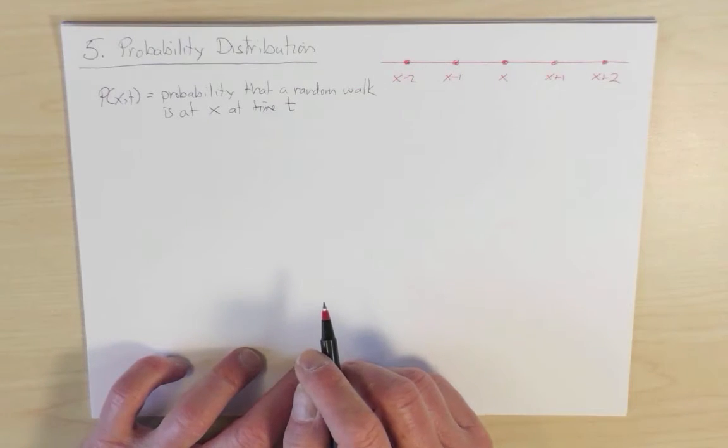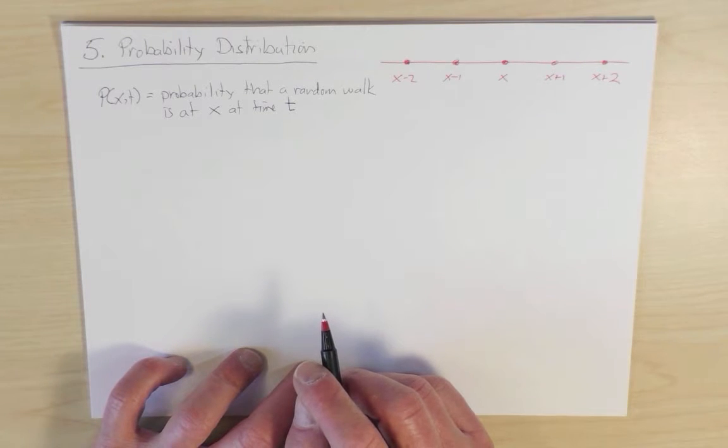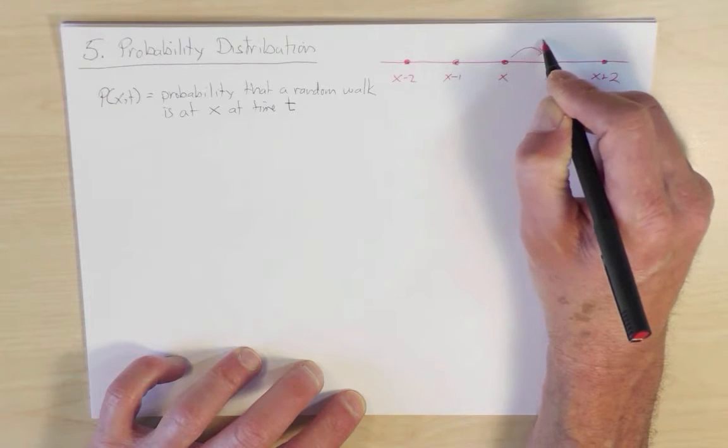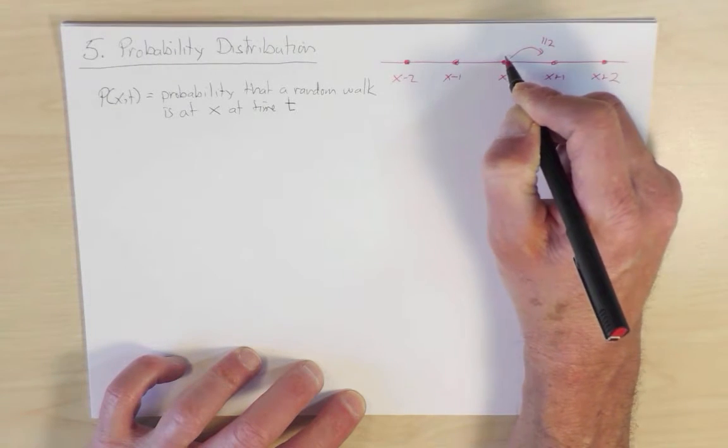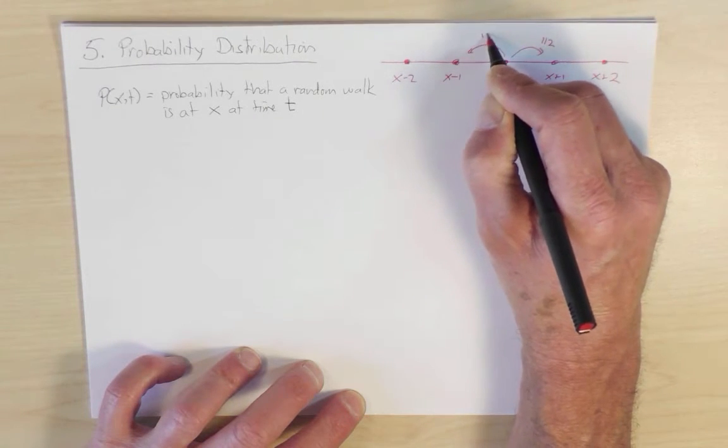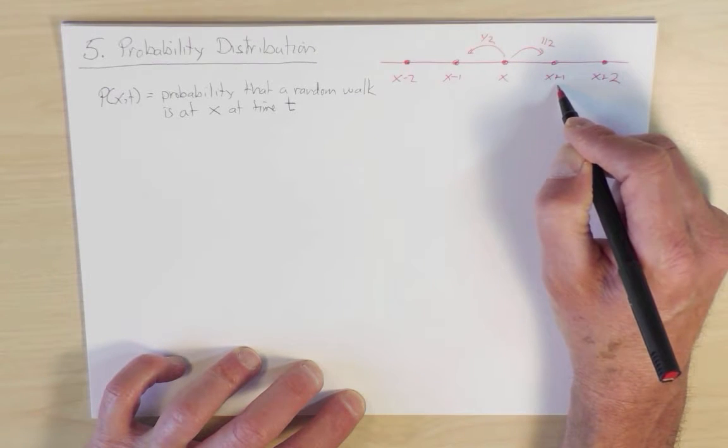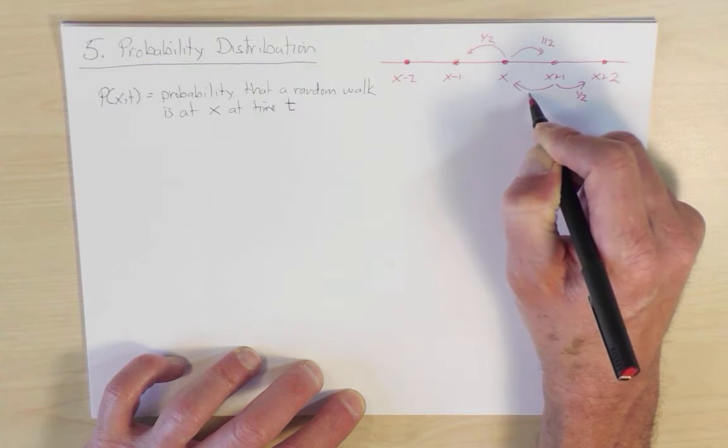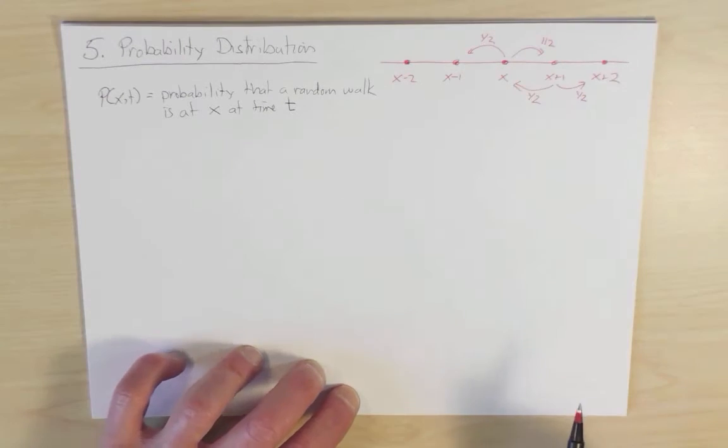And let's suppose that a random walk hops to nearest neighbors equally probably to the left and to the right. So from x, one hops with probability one half to the right and probability one half to the left. And similarly from x plus one, you can hop to x plus two with probability one half or to the left with probability one half, and the same for every other site of the lattice.